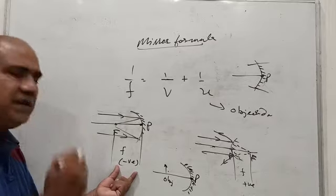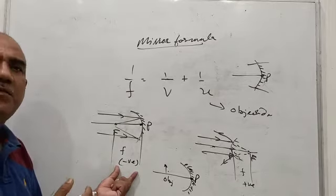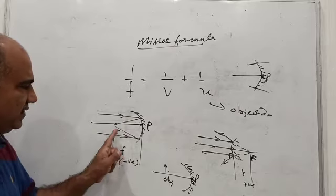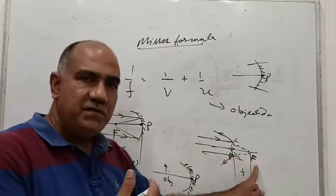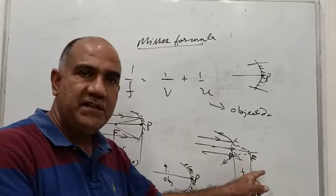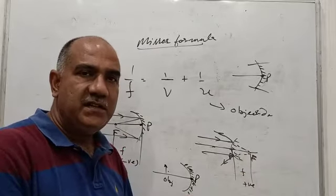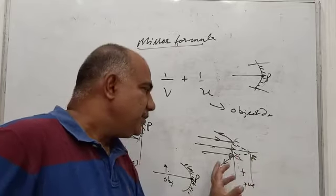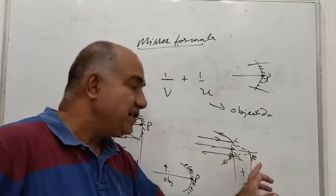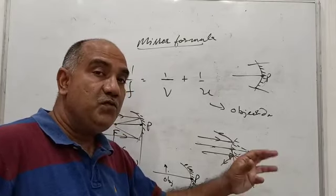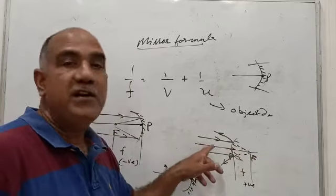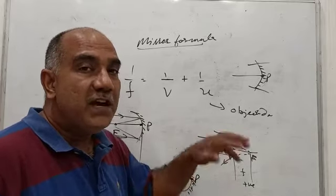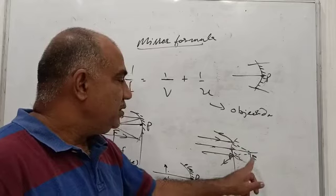The focus of a concave mirror is a real focus because light rays actually meet there after reflection. In contrast, the focus of a convex mirror is a virtual focus because light rays do not actually meet after reflection — they only appear to diverge from that point. The principal focus of a convex mirror is a point on the principal axis from which all light rays that were initially parallel and close to the principal axis appear to diverge after reflection.